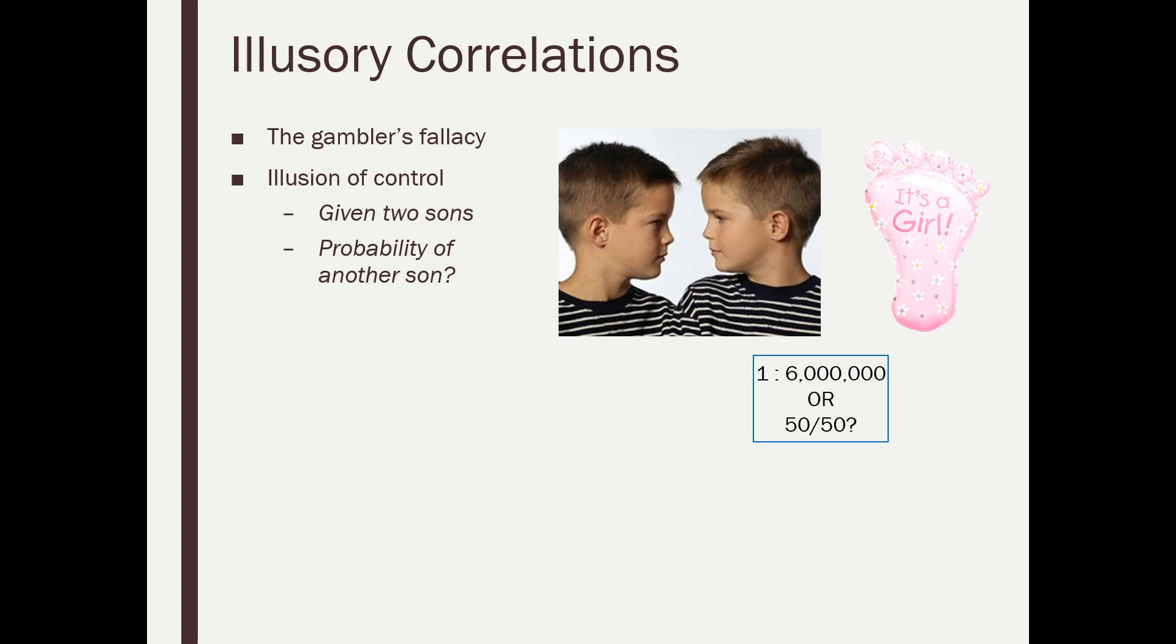Or should he have done the much simpler calculation that it's 50/50, just like the roulette wheel. It's not like the current conception has any idea of what was here before and tells itself, well, I better be a girl this time. Cause there's already been two boys. I mean, obviously not.